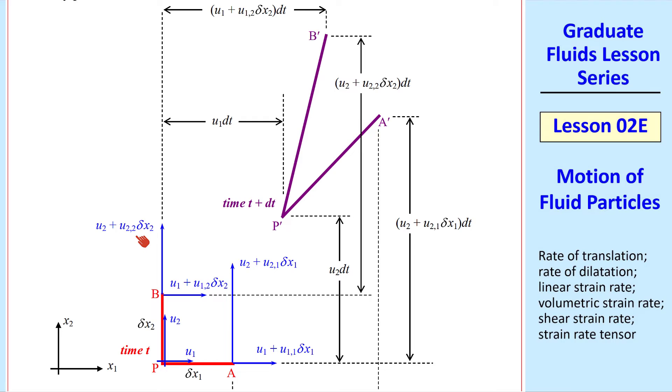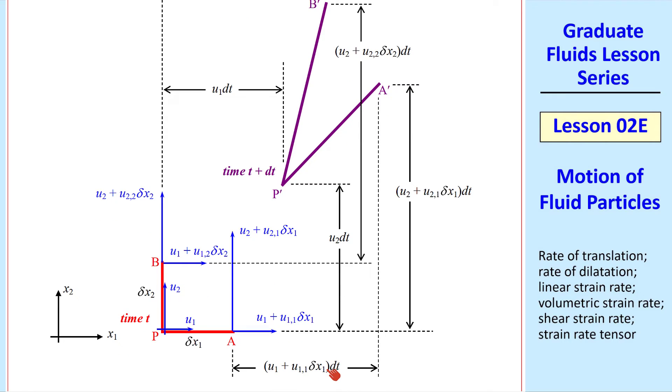Since this is the speed of B up, the distance would be that speed times dt to get up to B prime. And similarly with point A, both to the right giving this value and up giving this value based on this velocity.